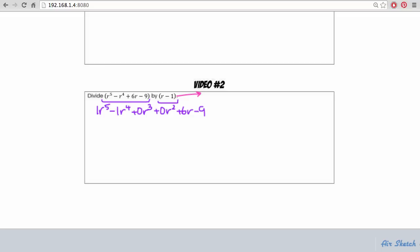Now our divisor we have r minus 1. Keep in mind to start synthetic division we need to set that equal to 0 and solve for r. That number r is going to be on the outside of our synthetic division.